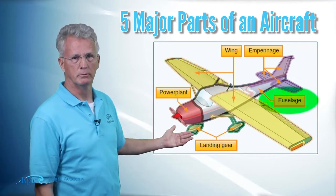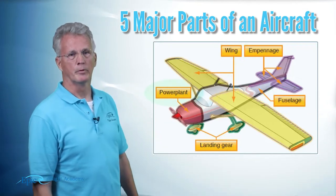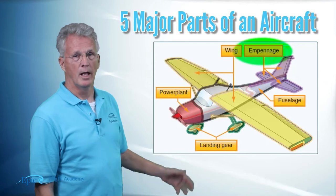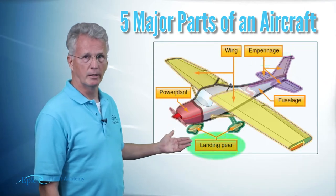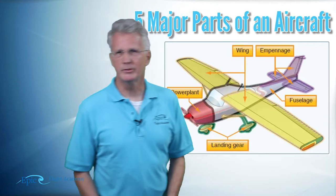The fuselage, the wing, the power plant, empennage, and landing gear. So, let's take a look at some of those. Let's start with the wing.